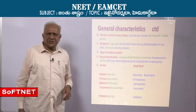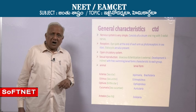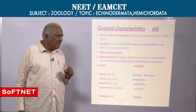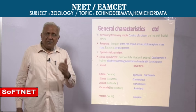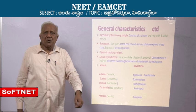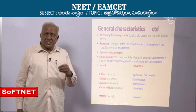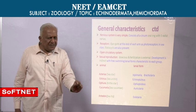Cephalopod eyes resemble vertebrate eyes: there is a lens, cornea, and retina. They also have the power of regeneration. In starfishes, when part of an arm is broken off it is regenerated subsequently. This phenomenon is called autotomy. Some starfishes can regenerate the whole body from one arm that is cut off — Linkia is an example.